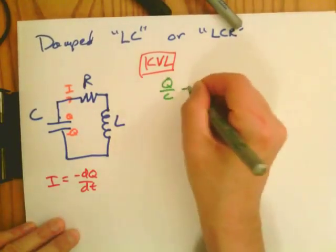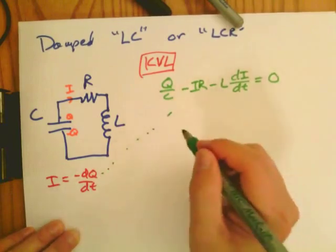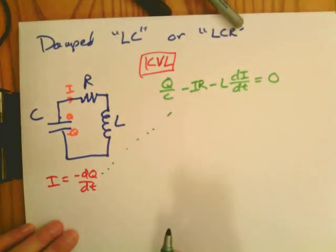So Q over C minus IR minus LdI/dt. So those are the three components. And we add up the voltages, plug in the expression for I.